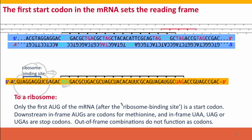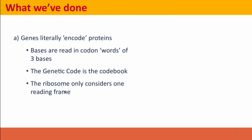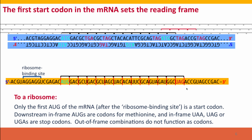That AUG sets the reading frame. From that AUG on, the sequence is read in groups of three. Any other methionine codons — any other AUGs — are just treated as methionine codons, not as start points. Furthermore, stop codons are recognized only if they're in the same reading frame as the AUG that started synthesis. Any stop codons that are out of frame are ignored. In fact, any out-of-frame combinations of any kind are ignored by the ribosome. It only sees the reading frame set by the AUG it started with.